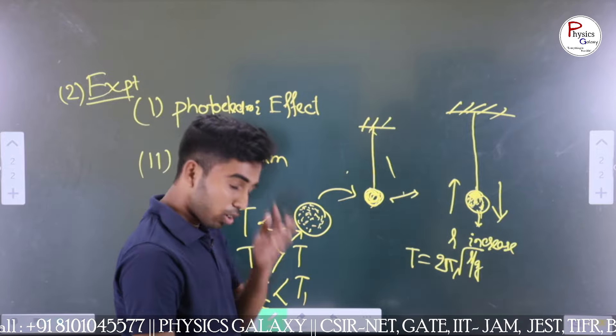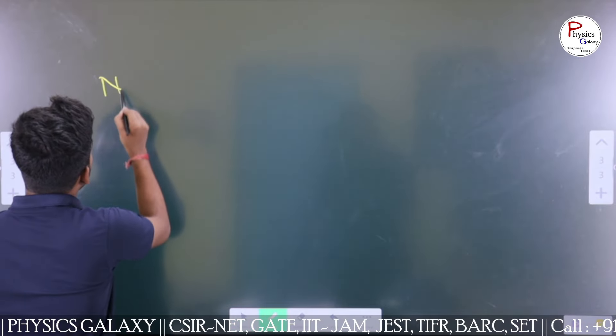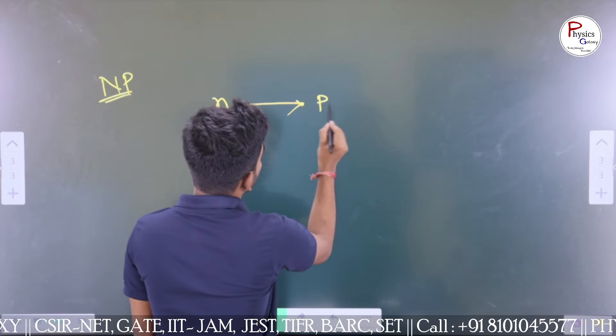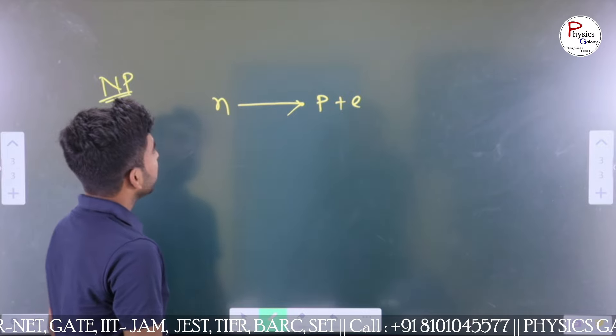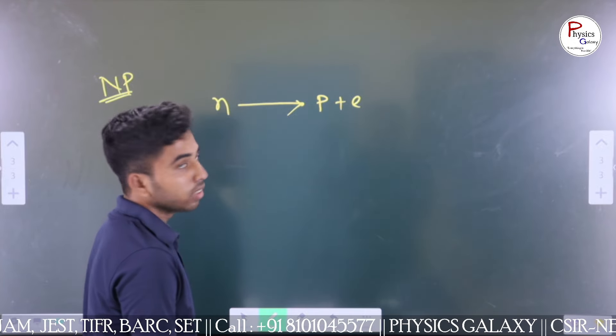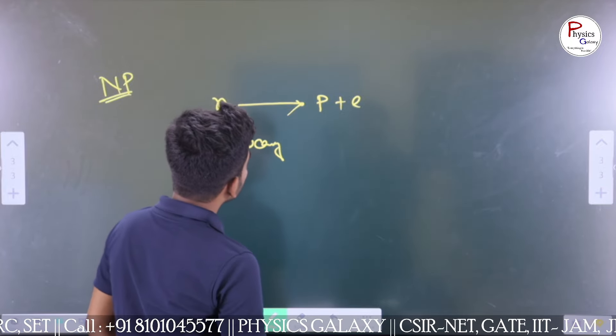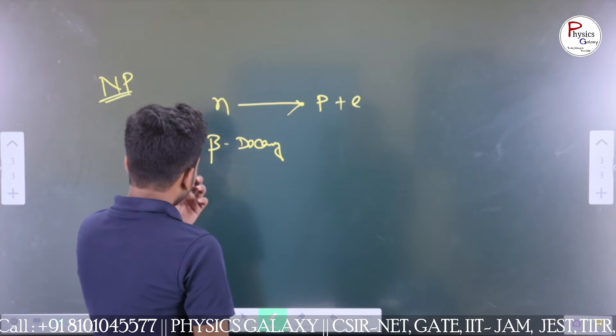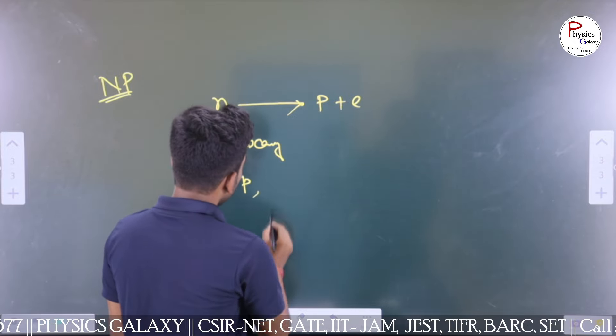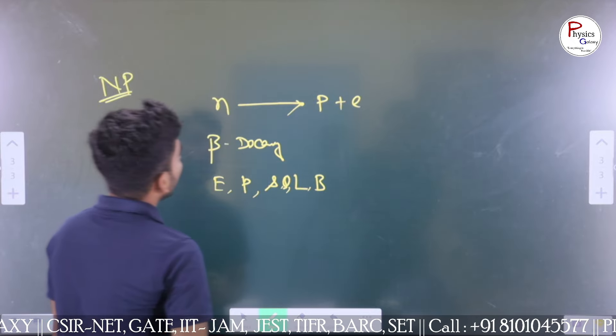After this, they asked from nuclear and particle physics. They gave me a nuclear reaction and asked if this reaction is allowed or not. If allowed, then why, and if not, then explain. This is a nuclear reaction, beta decay. To validate the nuclear reaction, we can conserve quantities such as energy, linear momentum, spin, lepton number, baryon number, and also charge.